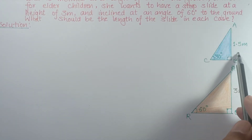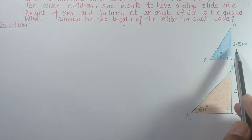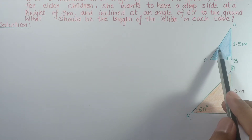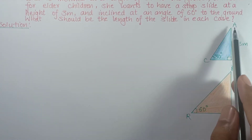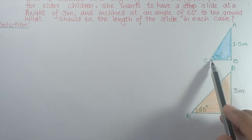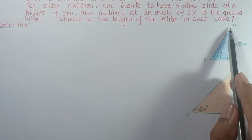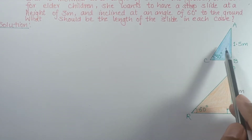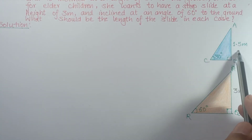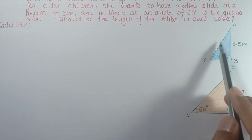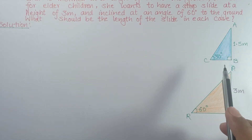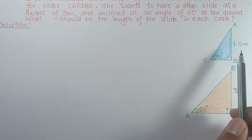The height is the perpendicular side of the triangle. The length of the slide is the hypotenuse — it is perpendicular to the height. The slide is the hypotenuse and the height is the perpendicular.